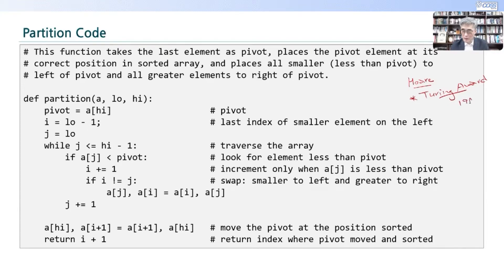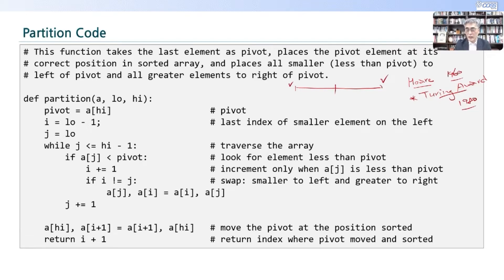1980년에 받으셨죠. 처음에 1960년에 발명하고 20년 후인 1980년에 Turing Award를 수상한 그러한 작품에 해당합니다. 알고리즘을 잘 짜면 이렇습니다. Pivot을 우리가 선택을 하잖아요. Array가 있으면 pivot을 맨 처음에 택할 수도 있고 맨 마지막에 택할 수 있구요. 그 다음에 중간에 적당한 데 택할 수 있습니다. 다만 pivot 왼쪽에는 작은 값이 오도록 나눌 수만 있으면 됩니다.